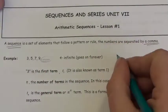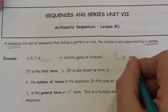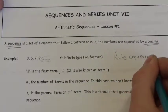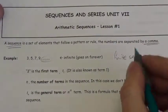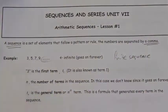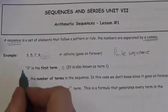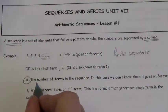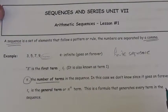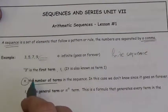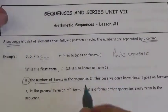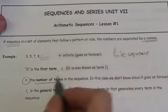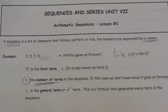It doesn't have to be infinite. You could have a finite sequence, which is going to have a certain specific number of numbers. Usually we're going to use the letter N to refer to the number of terms in that sequence. If we've got a finite sequence, then the number of terms we would call N.